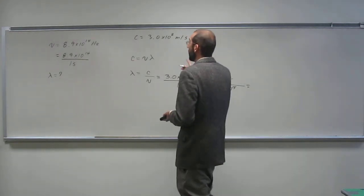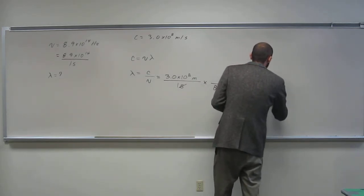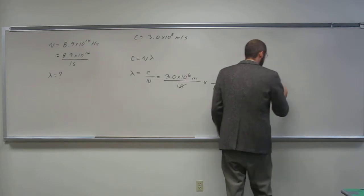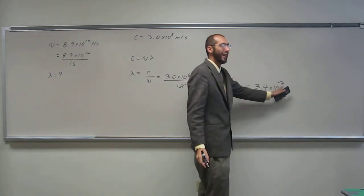So how many sig figs on this one? Two again. So I got 3.4 times 10 to the negative 7th meters.